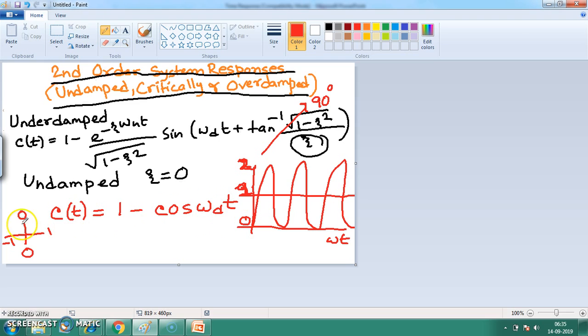Next, at angle pi by 2, the value of cos omega d t is becoming zero. So at the value of omega d t equal to pi by 2, cos omega d t is becoming zero, so c(t) is becoming 1.